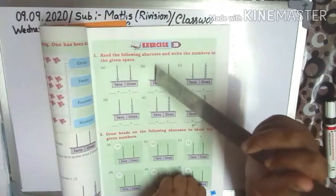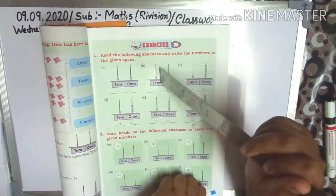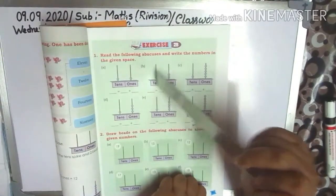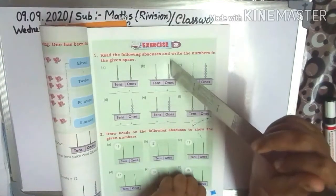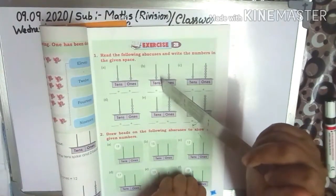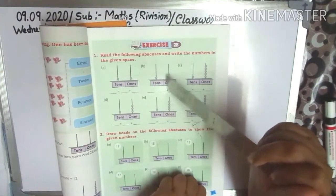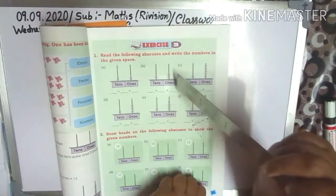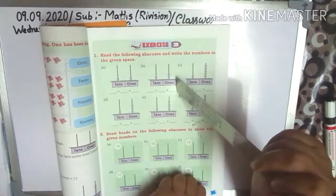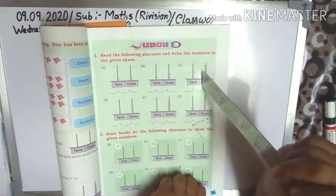Next — see 1 ten. So write 1. And 2 ones. So write here 2. So make 12: 1 ten plus 2 ones.